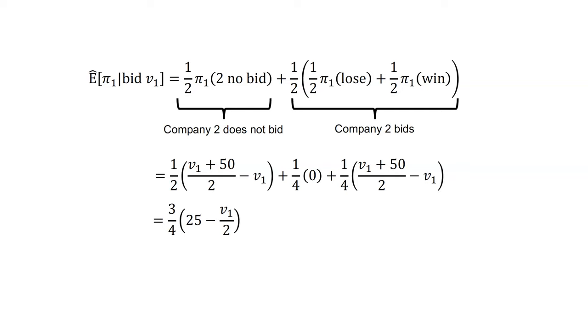Plus a quarter times V1 plus 50 over 2 minus V1. That being the profit they get if they win when Company 2 bids. And that all equals three quarters times, 25 minus V1 over 2.